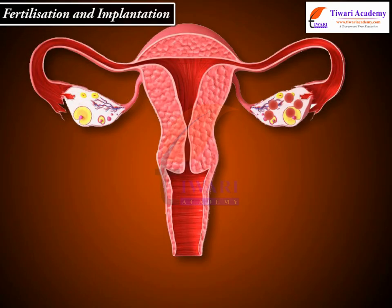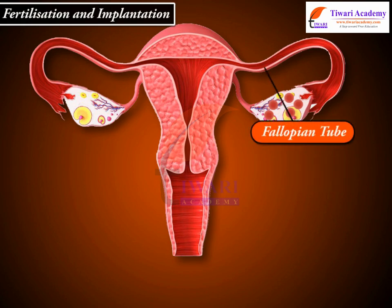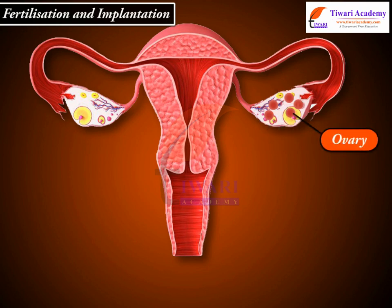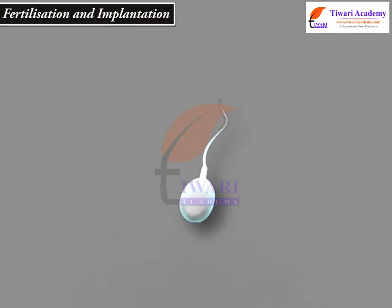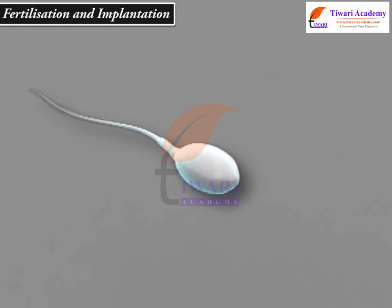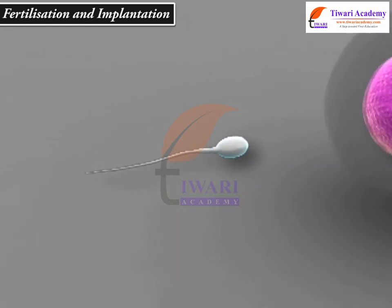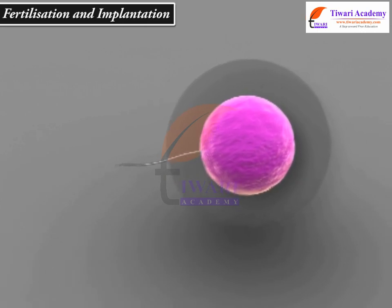Following ovulation, the ovum is picked up by the fimbriae of the fallopian tube on the same side of the body as the ovary that released the ovum. The ovum will remain in the fallopian tube alive and fully functioning for only about 12 to 24 hours. Sperm can live longer in the female reproductive system, up to 72 hours, but most die before this time.